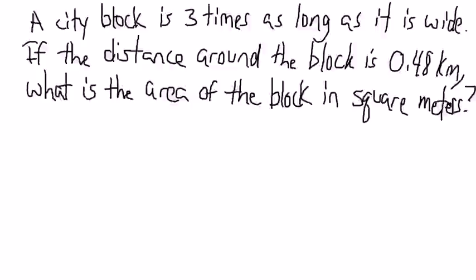So, what we have is a rectangle. Now I know that the perimeter, the distance around, is 0.48 kilometers. Now, they want the answer in square meters. And when we get into area, length times width, you end up in trouble sometimes with our units. So, I'm going to change to meters right away. I know there's a thousand meters in a kilometer. So, 0.48 kilometers is actually 480 meters. That's the distance around.